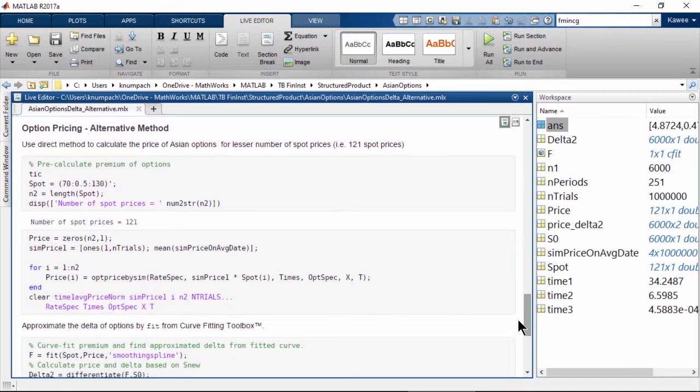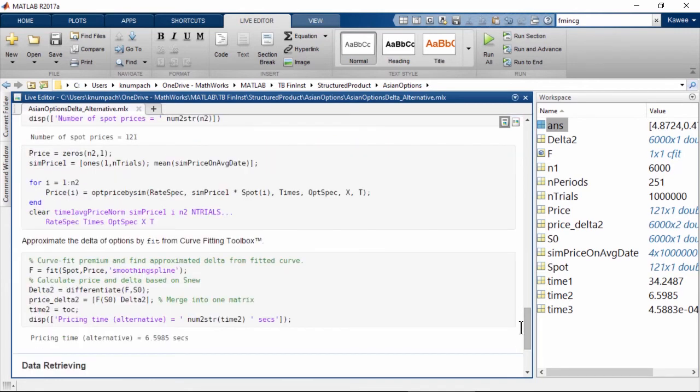Instead of calculating 6,000 option prices, we can calculate option prices in a smaller subset. For example, we can sample the spot prices for every 50 cents and directly calculate option prices for just 121 spot prices. Then, we can use curvefit function in the curve fitting toolbox to fill in the rest of option prices. Because delta is just the slope of the option price curve, we can differentiate the option price curve to obtain delta in just one line of MATLAB code.